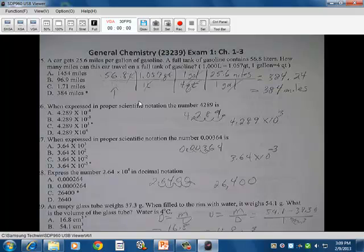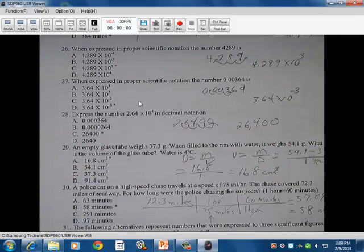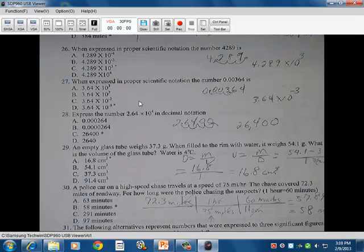26. When expressed in proper scientific notation, 4,289. You basically move that decimal point over 1, 2, 3. Then that generates 4.289 times 10 to the third. And that happens to be then answer C. 27. When expressed in proper scientific notation, the number .00364 is. So you start here and you go 1, 2, 3 in that direction and to the right. So it's a negative. So 3.64 times 10 to the minus third. Happens to be then answer D.